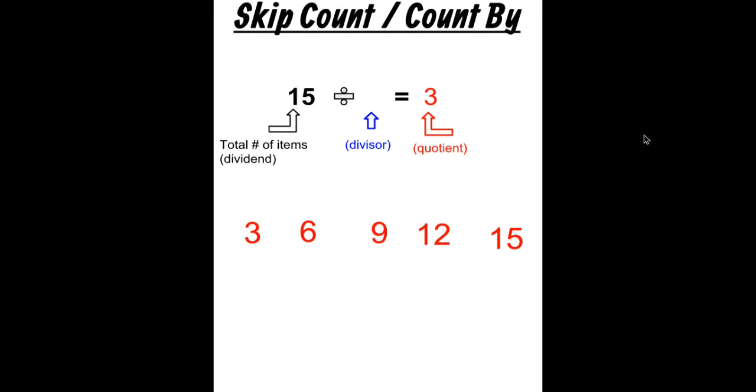Now we're going to count how many times we skip counted by 3 to get to 15. So it's 1, 2, 3, 4, 5. So we can see that our missing divisor was 5. We can use skip counting also to find the unknown when the divisor is the unknown and not just the quotient.